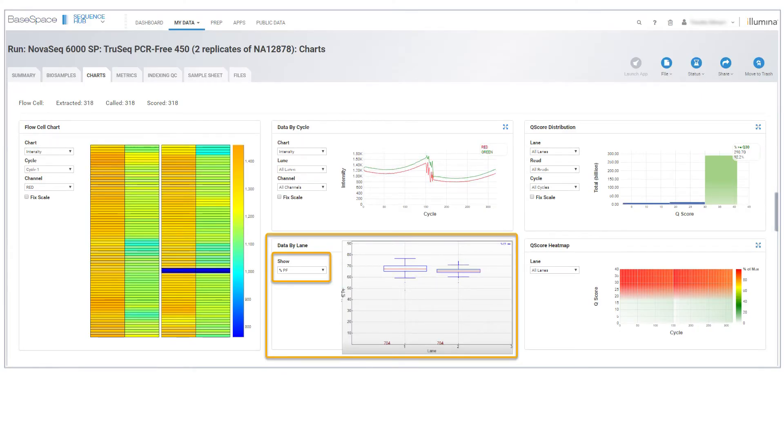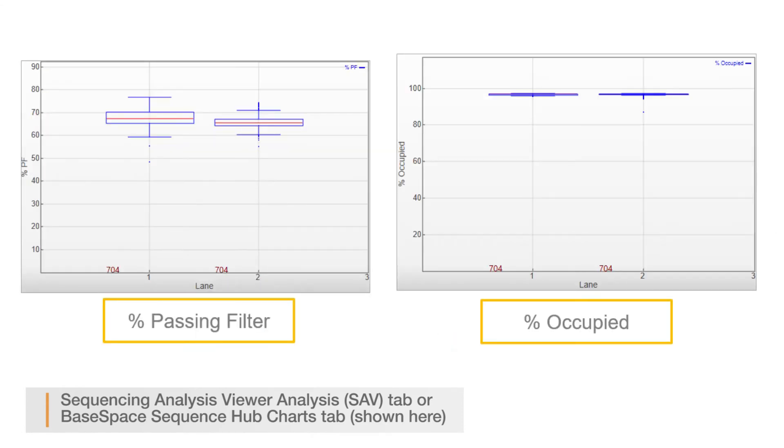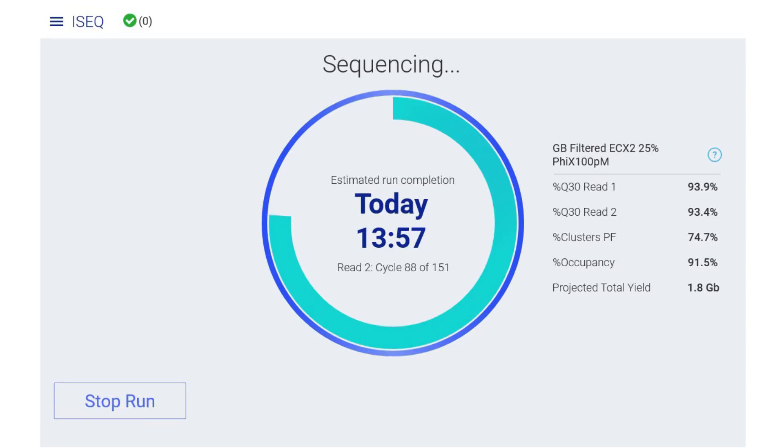For high throughput platforms like NovaSeq 6000, use Sequencing Analysis Viewer or BaseSpace to find overall percent PF and percent occupancy metrics for your run. For lower throughput platforms like iSeq 100, percent occupancy and the percent PF will be displayed on screen in the instrument control software during the run.